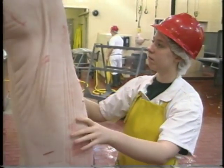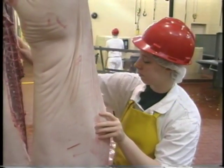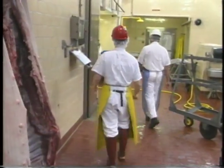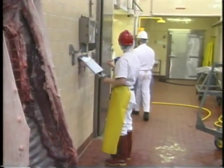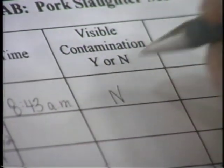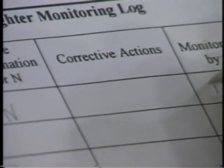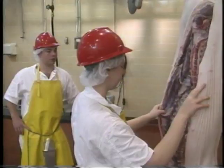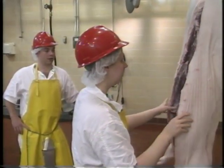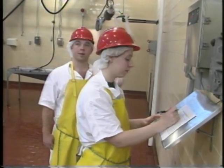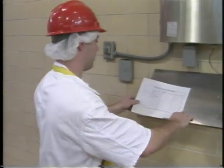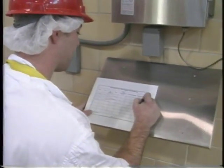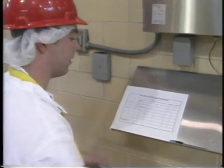The designated employee monitors this CCP by carefully looking over each carcass for fecal, ingesta, and milk contamination. Seeing none, this employee records on the monitoring log the time of check, Y or N for yes or no under the visible contamination column, and initials the record. According to this HACCP plan, verification will occur daily, performed by a second employee. Verification in this establishment involves both checking the checker and checking the records for accuracy and completeness, and is documented on the monitoring form.